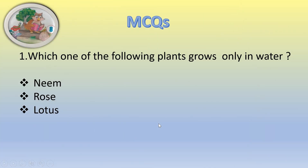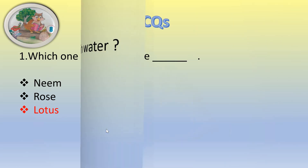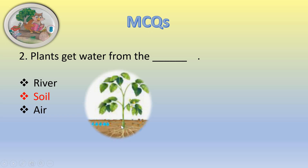Now MCQs. Which one of the following plants grows only in water? The options are neem, rose, and lotus. The correct answer is lotus. Second MCQ: plants get water from the blank. The options are river, soil, and air. The correct answer is soil. You can see in the picture that the plant is getting water from soil.